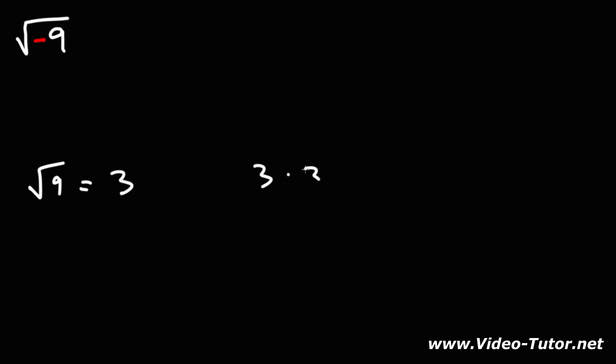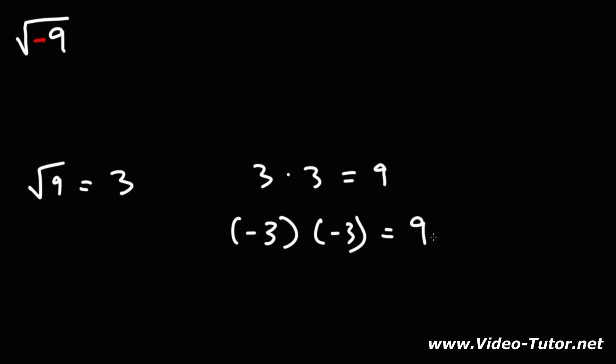How would you simplify this expression? What is the square root of negative 9? How can we find the square root of a negative number? Let's compare this to the square root of 9. The square root of 9 is 3 because 3 times 3 equals 9. But negative 3 times negative 3 also gives us positive 9. We can't find two identical numbers that when multiplied together give us negative 9 — it just doesn't work that way.